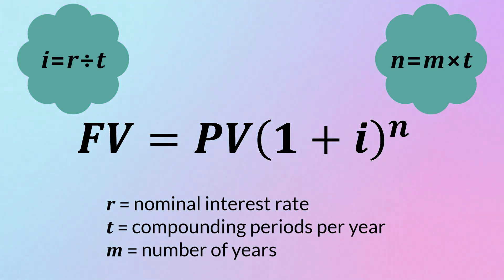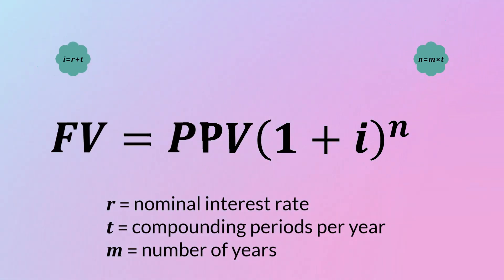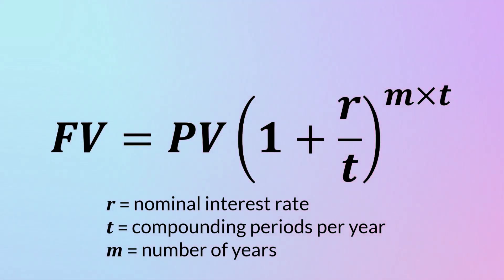To account for these changes, which are made when interest is compounded more frequently than yearly, the alternative formula can be used instead. Notice how in place of I we have R over T, and in place of N we have M times T.